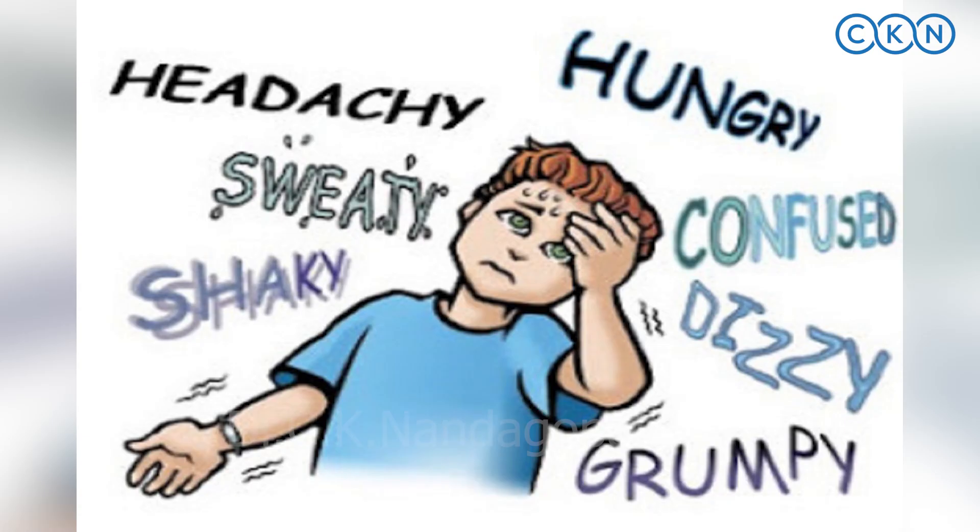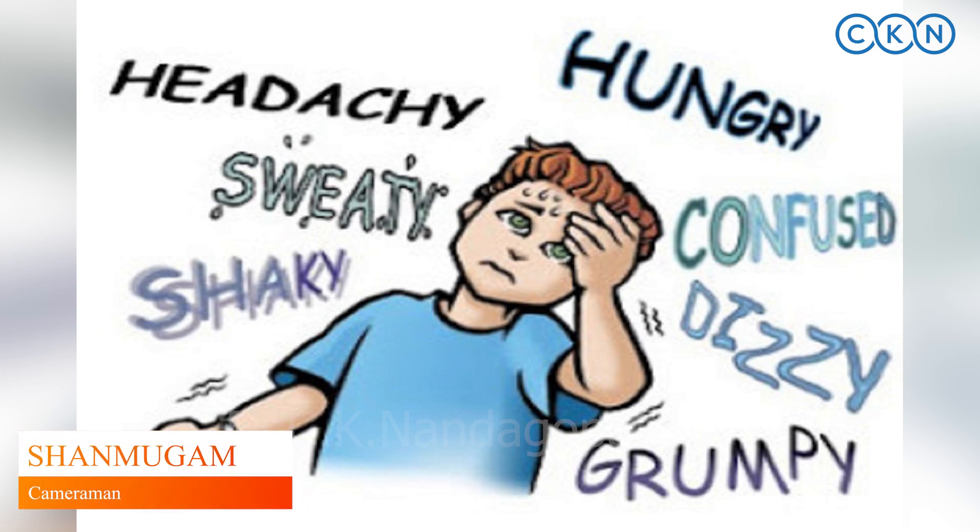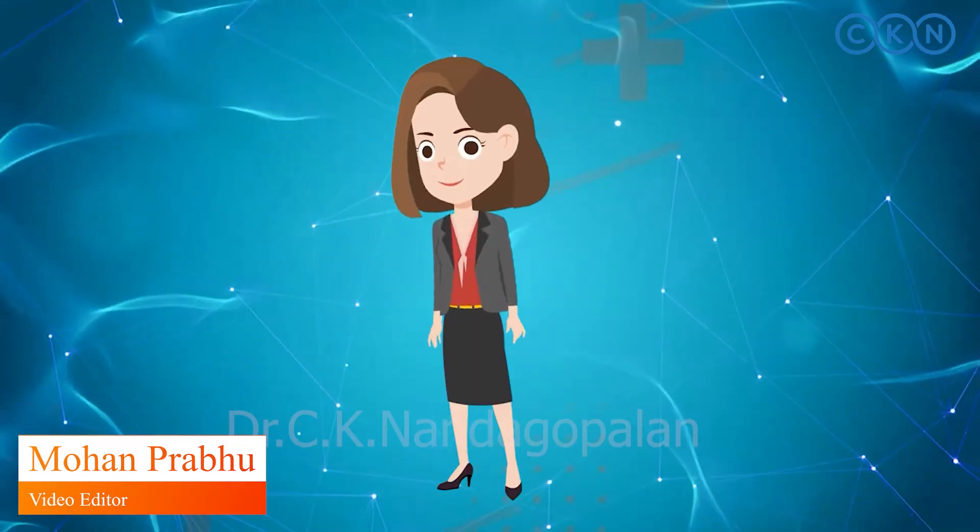Previously there was something called latent diabetes which came in middle age, but now they don't give much importance to that. Then there is juvenile diabetes, which hits in younger age — a child one, two, three, or five years old. Today this is also called pancreatitis — the pancreas not functioning properly, not producing enough insulin and amylin — so it is more of a Type 1 diabetes.